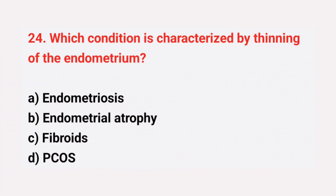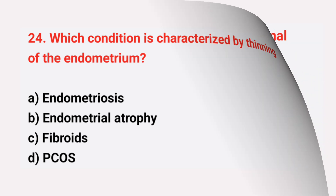Question number 24: Which condition is characterized by thinning of the endometrium? The right answer is option B, endometrial atrophy.